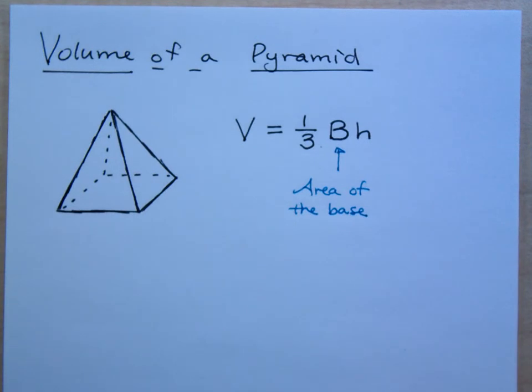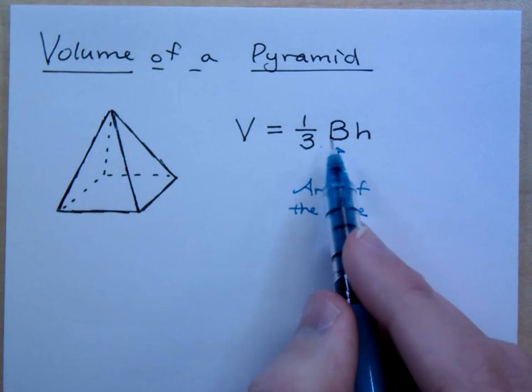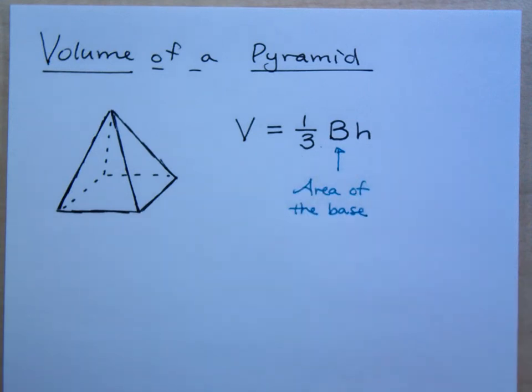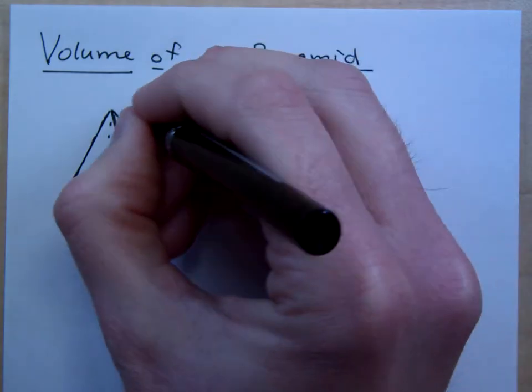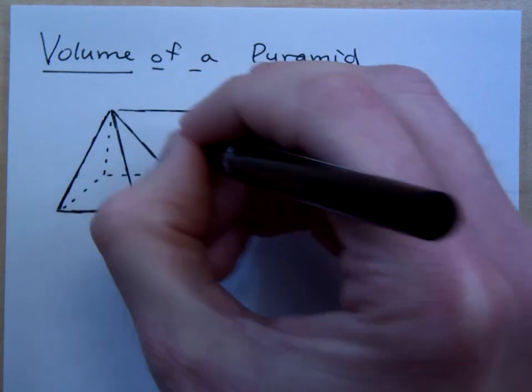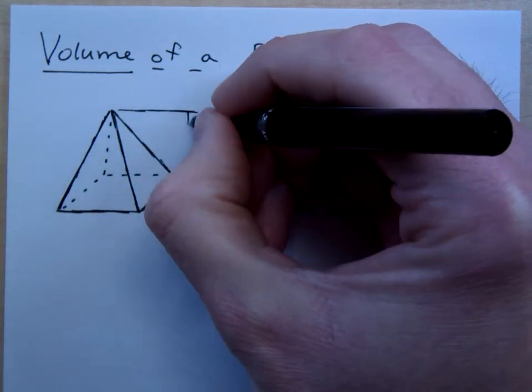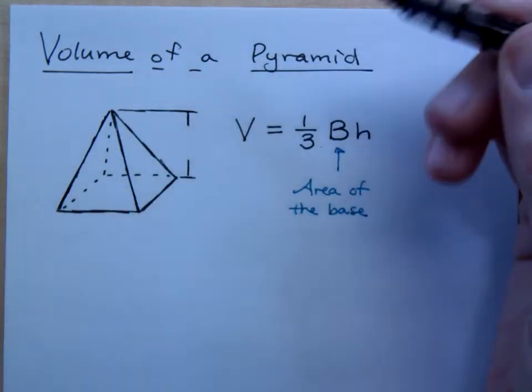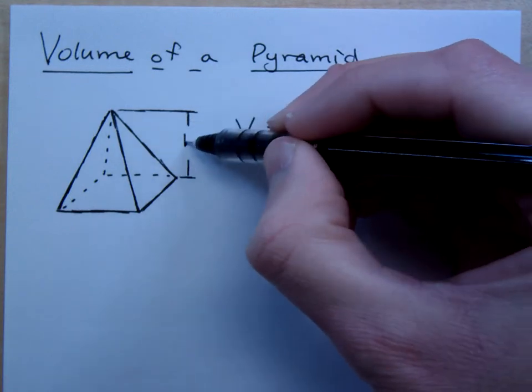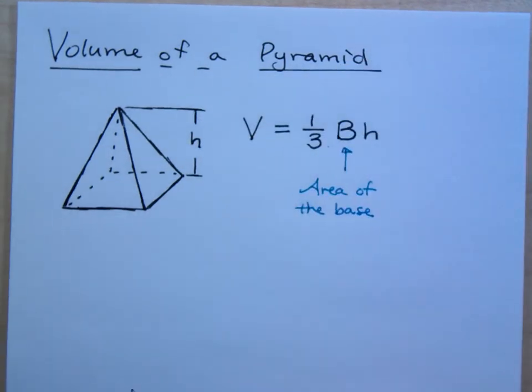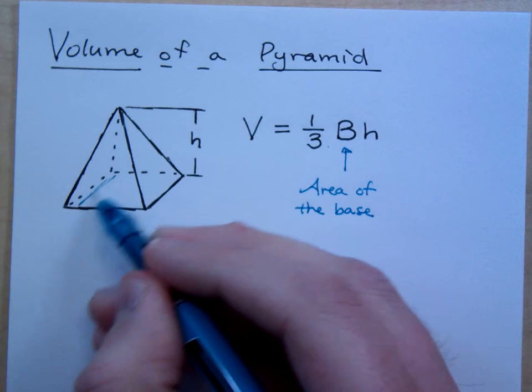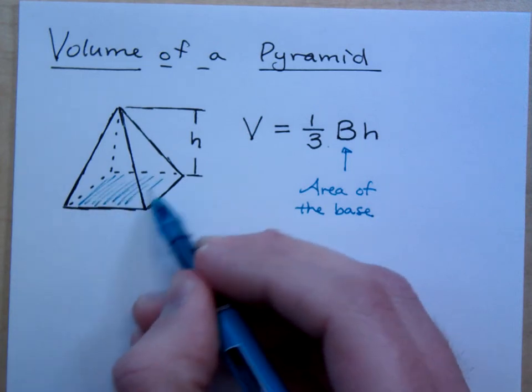So, finding the area of the base is important. You multiply that times a third and times the height. Of course, remember the height is just the distance from that vertex at the very top here to the base. And the big B right here is just going to be whatever the area of the base happens to be.